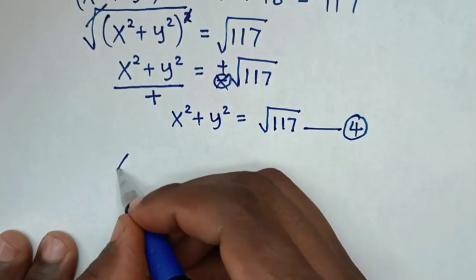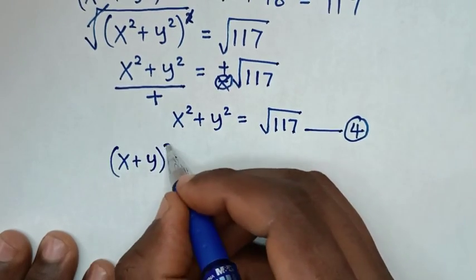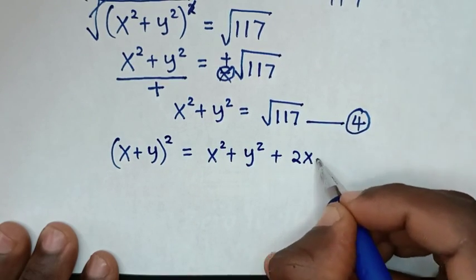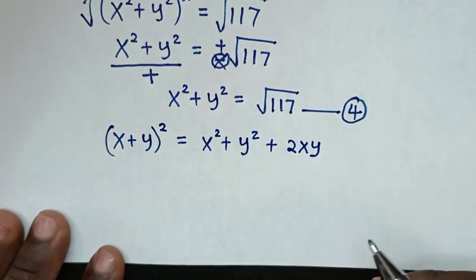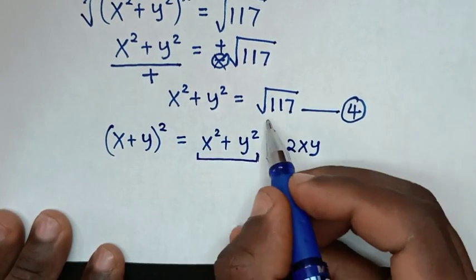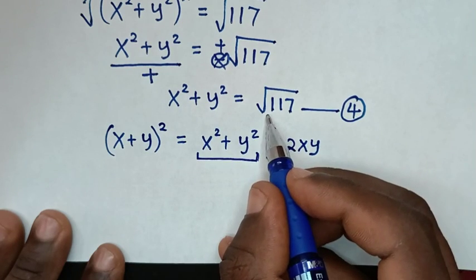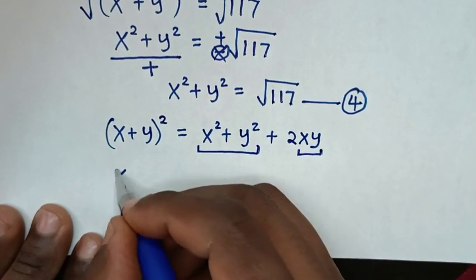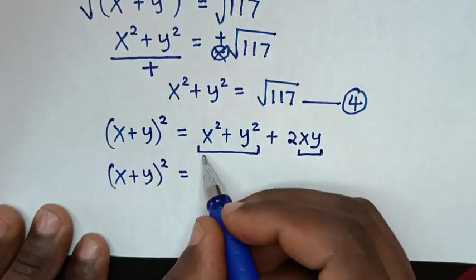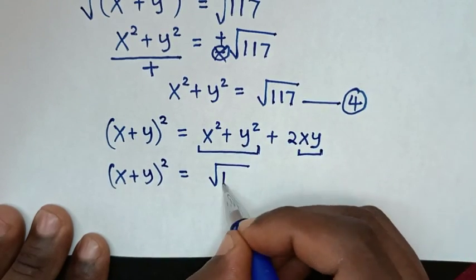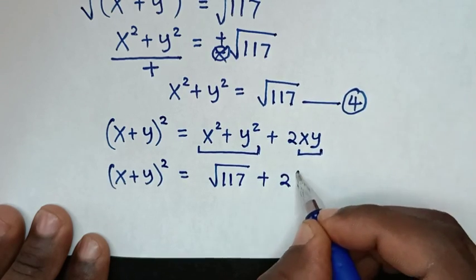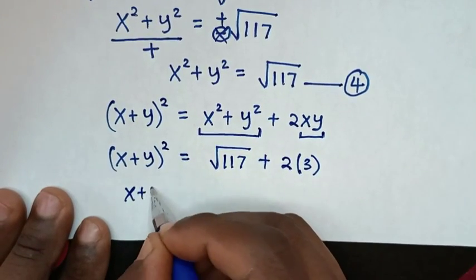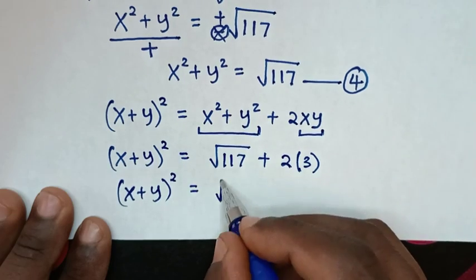Then the next step, we apply the rule that (x plus y) squared is equal to x squared plus y squared plus 2xy. From here, x squared plus y squared is square root of 117, and xy is 3. Then it will be (x plus y) squared is equal to square root of 117 plus 2 times 3, which is square root of 117 plus 6.